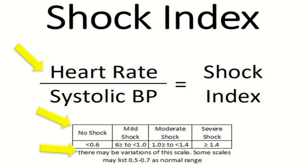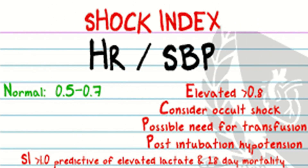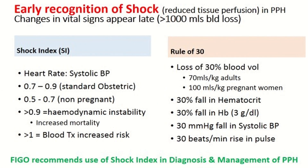There may be variations of this scale; some scales may list 0.5 to 0.7 as the normal range. Higher values are more sensitive in the detection of occult shock, transfusion requirements, and post-intubation hypotension than either vital sign in isolation. A shock index of more than 1 is predictive of elevated lactate and 28-day mortality.